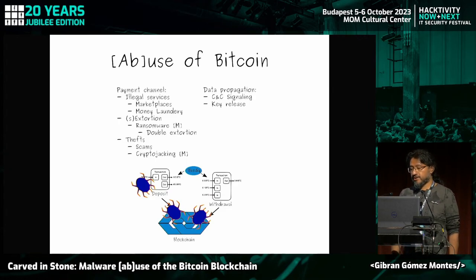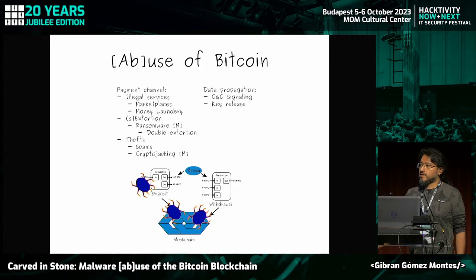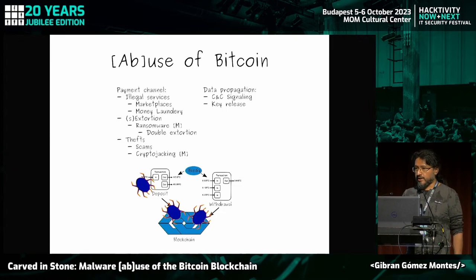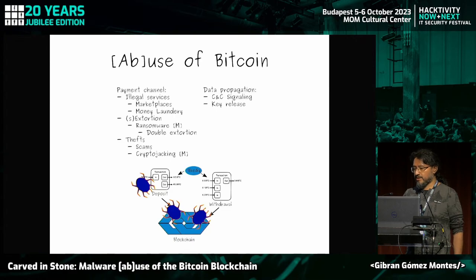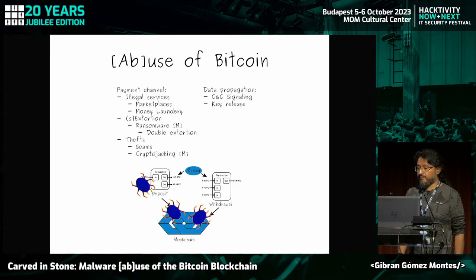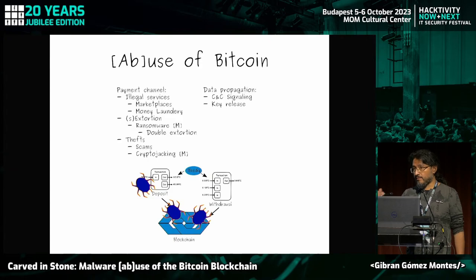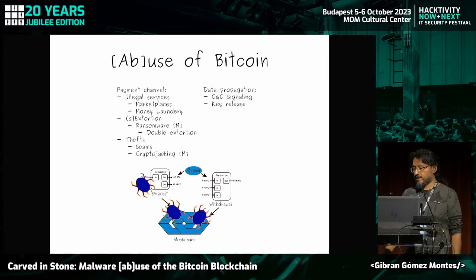In this talk we focus on the other type of abuse we've seen in our research: data propagation. The properties of Bitcoin make it a very resilient mechanism for storing and propagating data, since it's decentralized and public — you don't need to ask anybody to store information on the blockchain. We've seen two types of this abuse: command-and-control signaling used by malware botnets, and releasing decryption keys to ransomware victims.